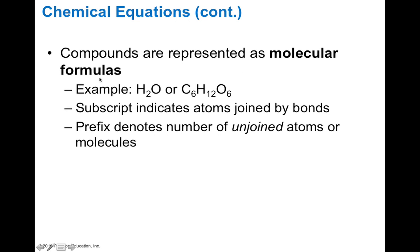When we write out our chemical equation, it's in the form of a molecular formula. So water is written in this molecular formula way, and so is glucose. It just tells us the number of atoms that you find in each of these molecules. So you have two hydrogen atoms and one oxygen atom — H2O, or water — or C6H12O6 makes glucose.